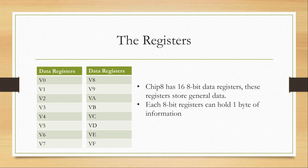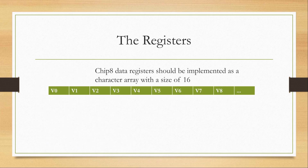The Chip 8 has 16 8-bit data registers, generally used to store general data such as the score in a game. For example, in Pong you could use these data registers to store how much score each team has. Because they are only 8-bit wide, they can only hold one byte of information per register. The Chip 8 data registers should be implemented as a character array with a size of 16 because of the way the instruction set is designed.